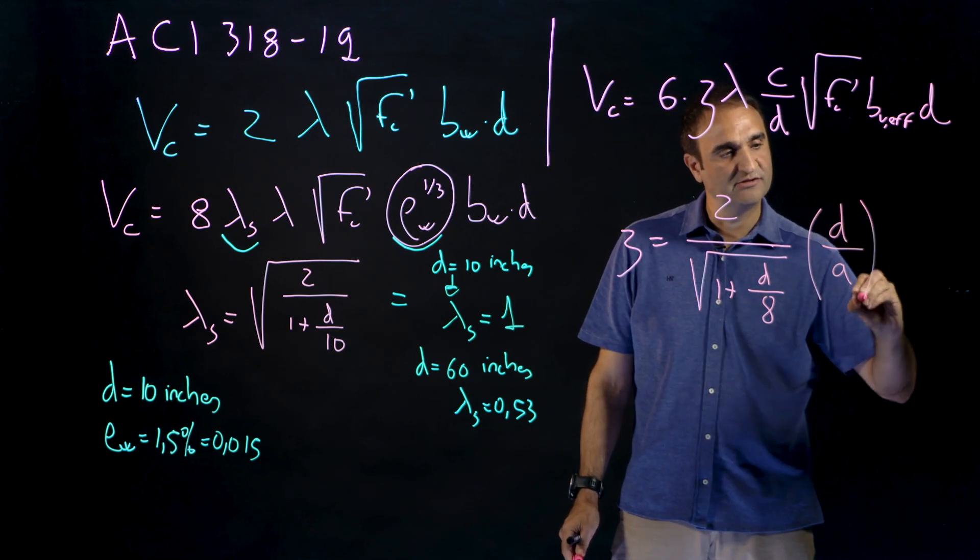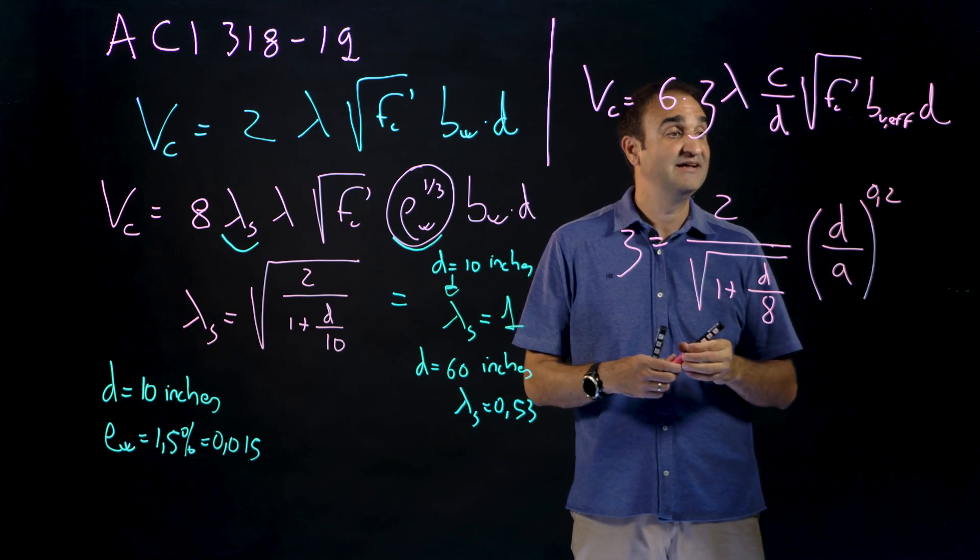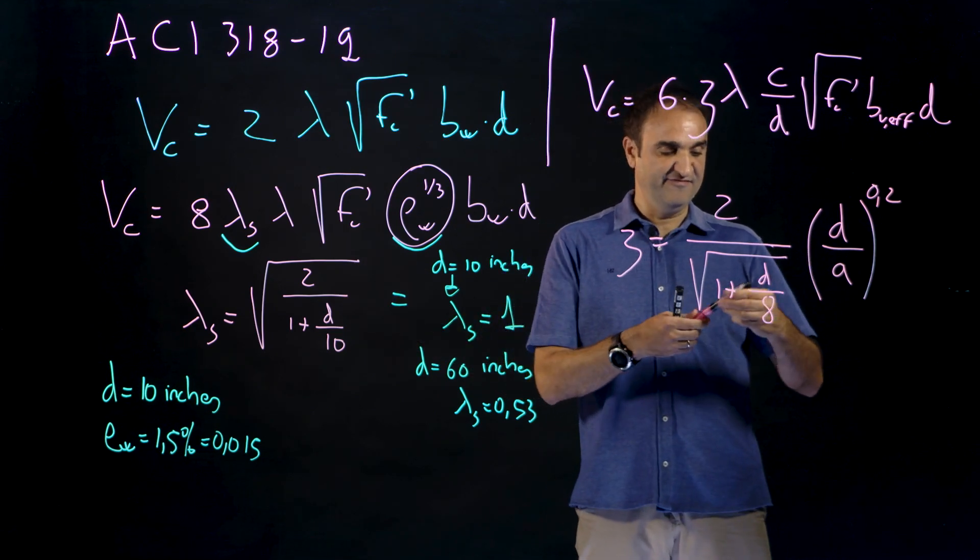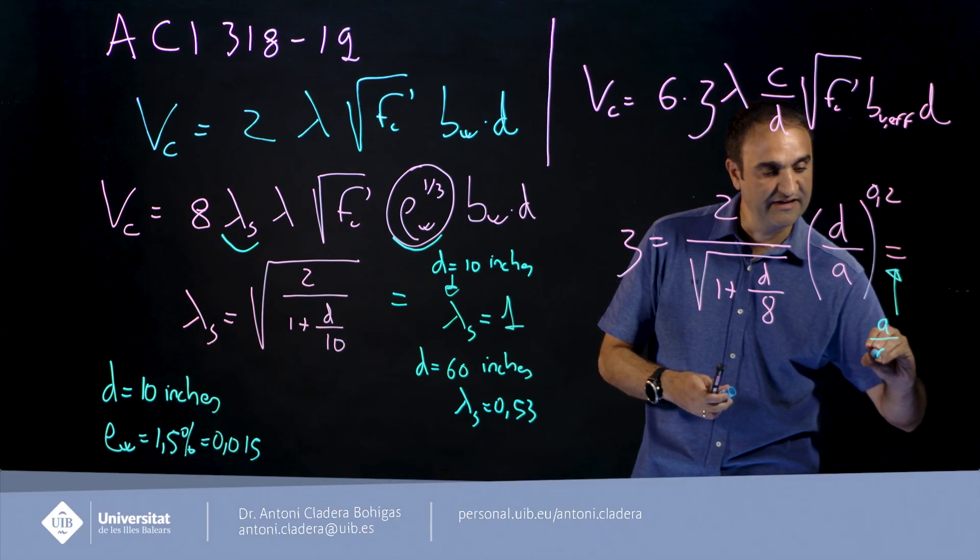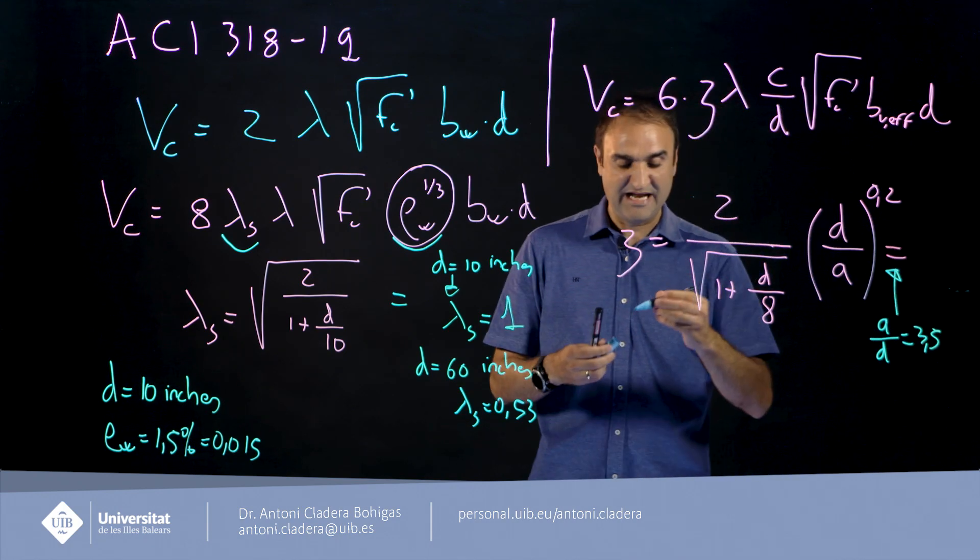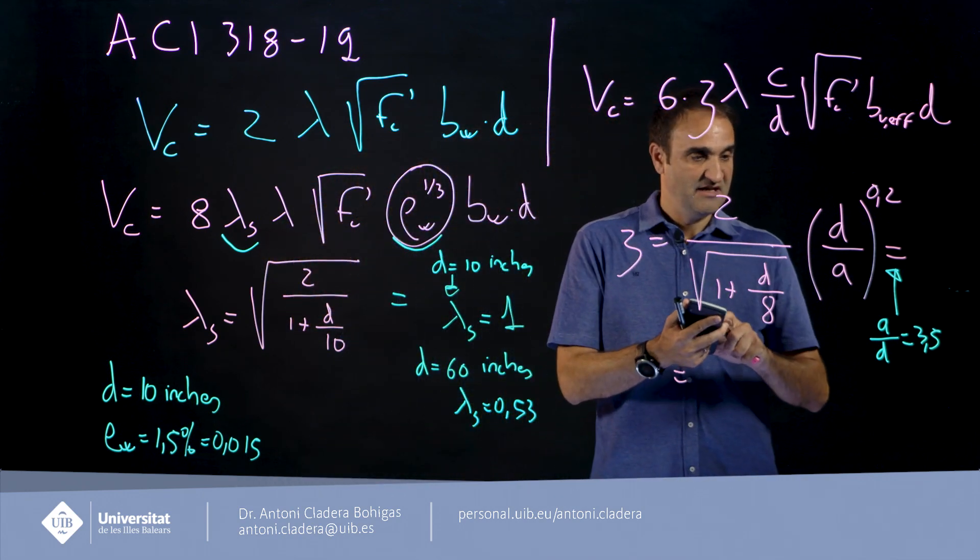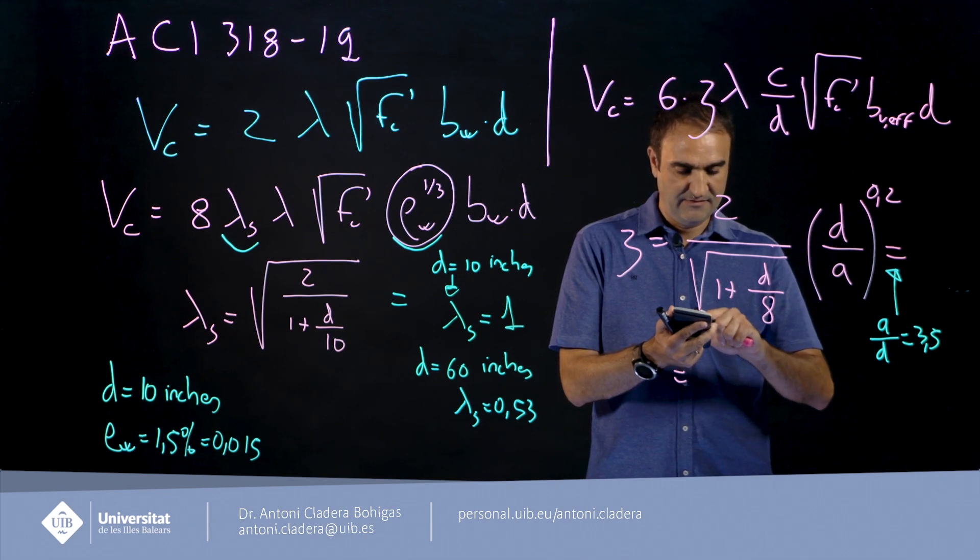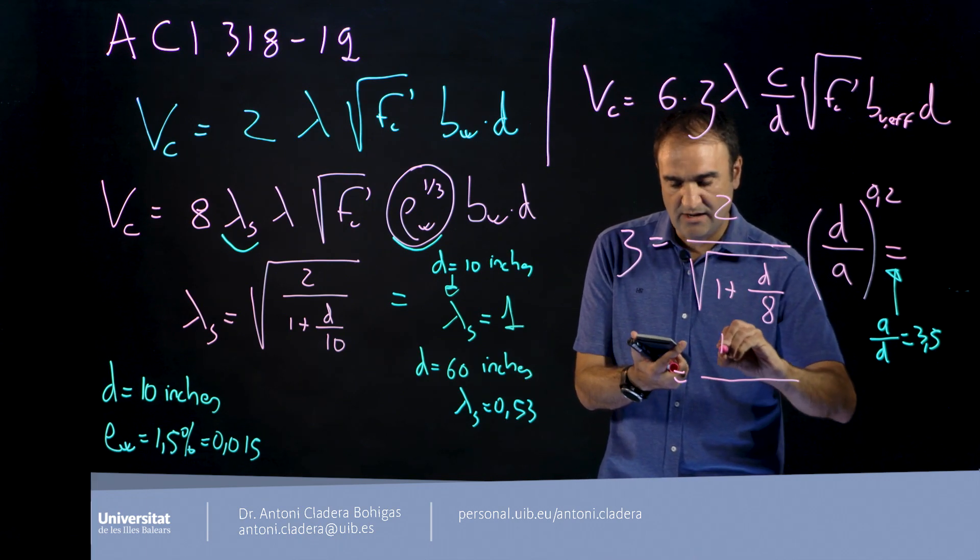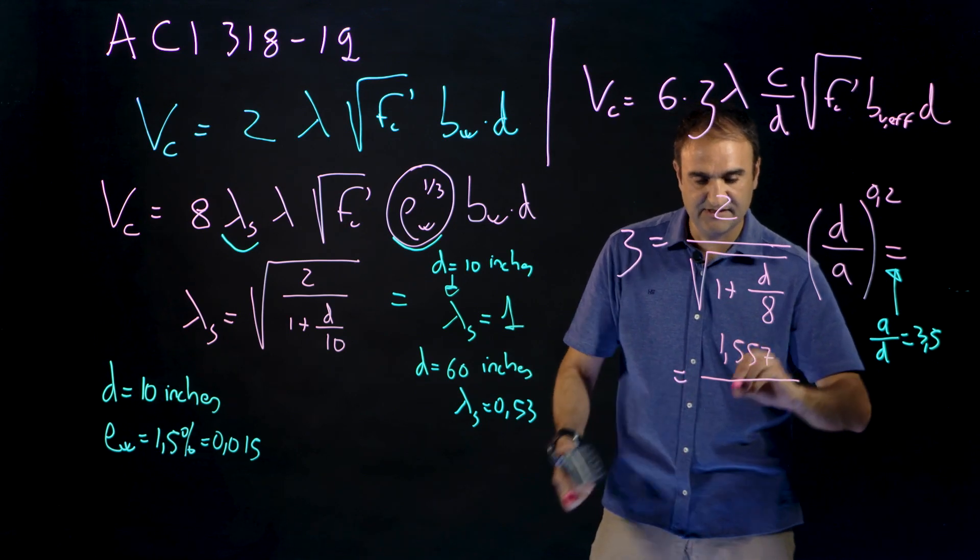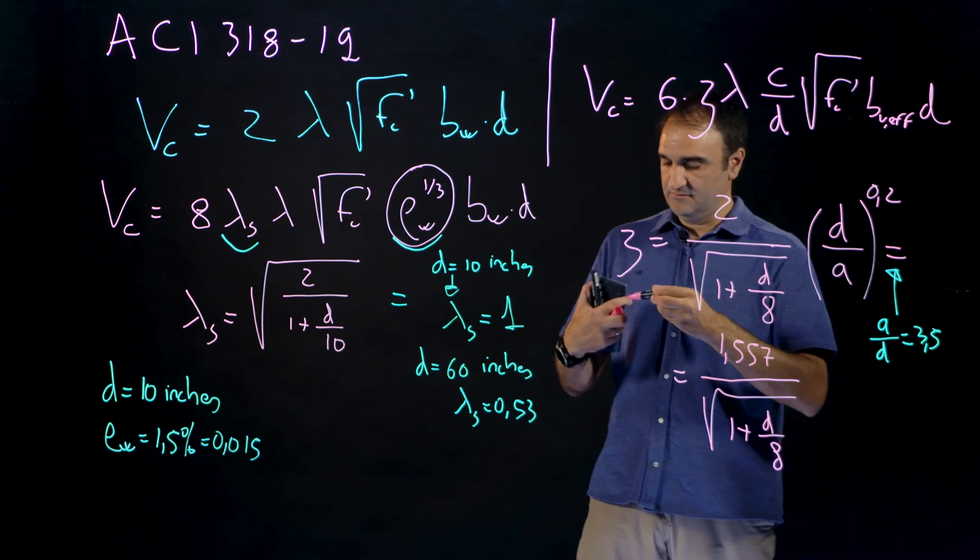This is the ratio between the effective depth and the shear span. It looks different but in fact if we substitute here for example a typical a over d equal to 3.5, well what we can obtain here is, let's take that here 1 over 3.5, we have here 1.557.